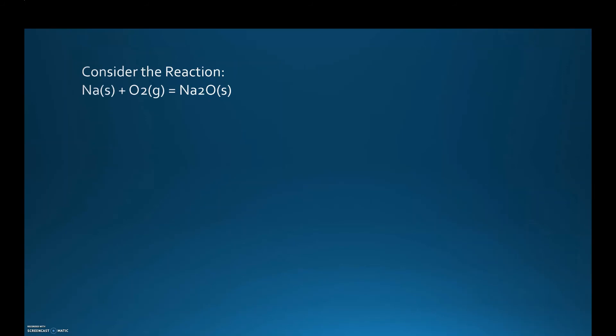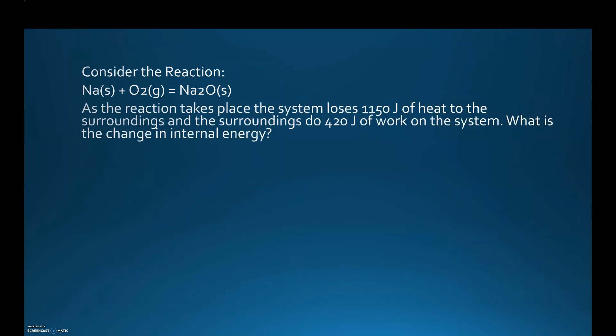So if we consider this reaction here: sodium reacting with oxygen gas to form sodium oxide. As the reaction takes place, the system loses 1,150 joules of heat to the surroundings, and the surroundings do 420 joules of work on the system. What is the change in internal energy? First of all, the system loses this much heat, so q is going to be equal to negative 1,150 joules. And then the surroundings do 420 joules of work on the system, so w is going to be positive 420 joules. We're plugging into the ΔE equation, and what we get here is negative 730 joules.